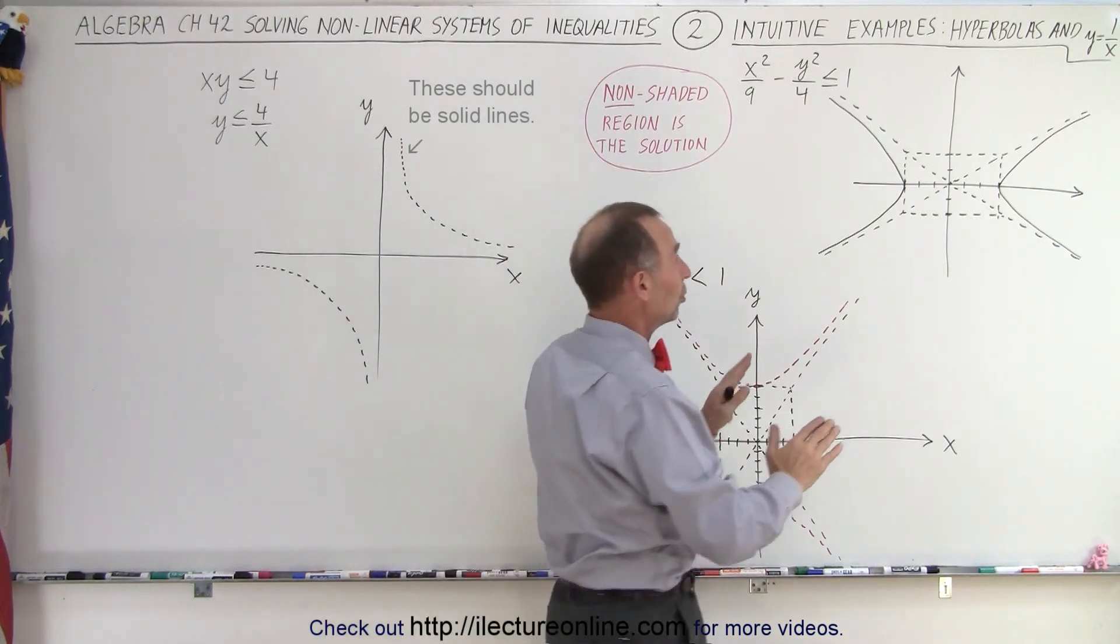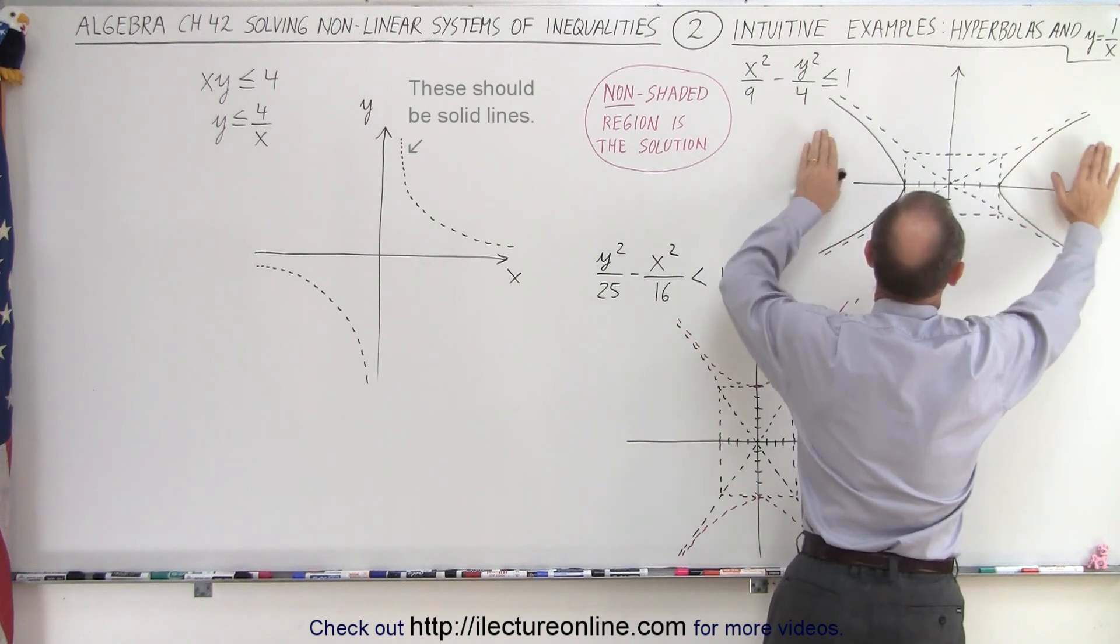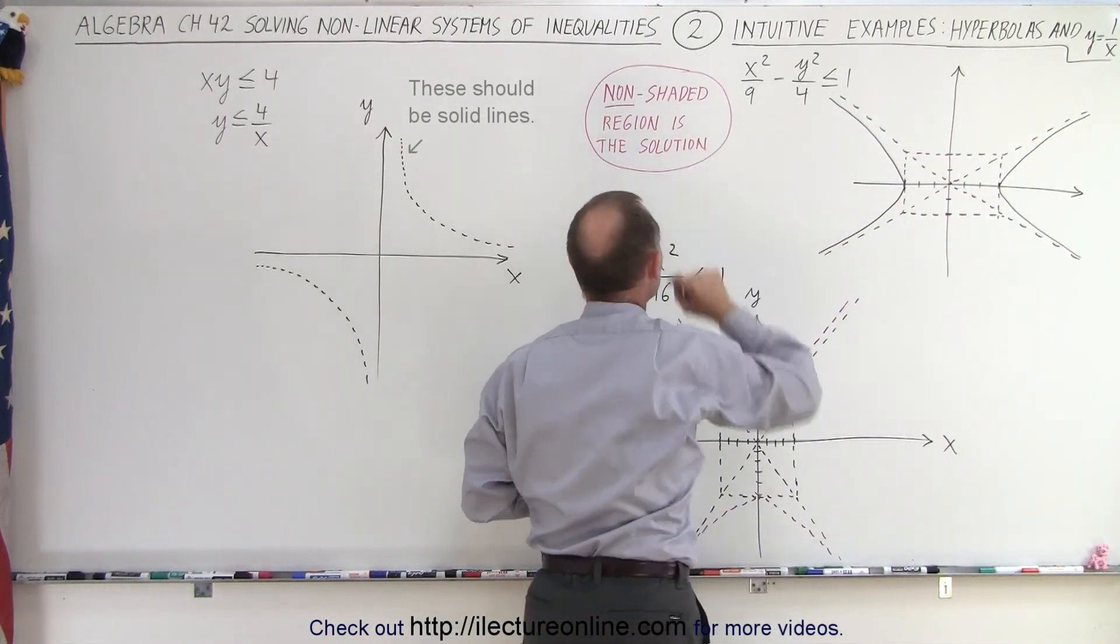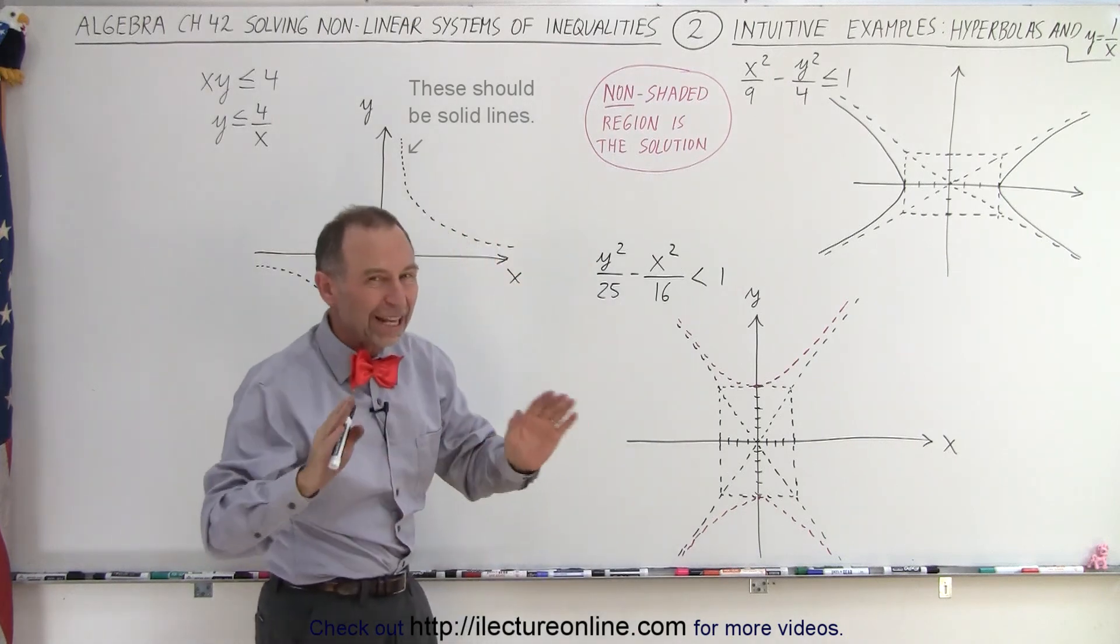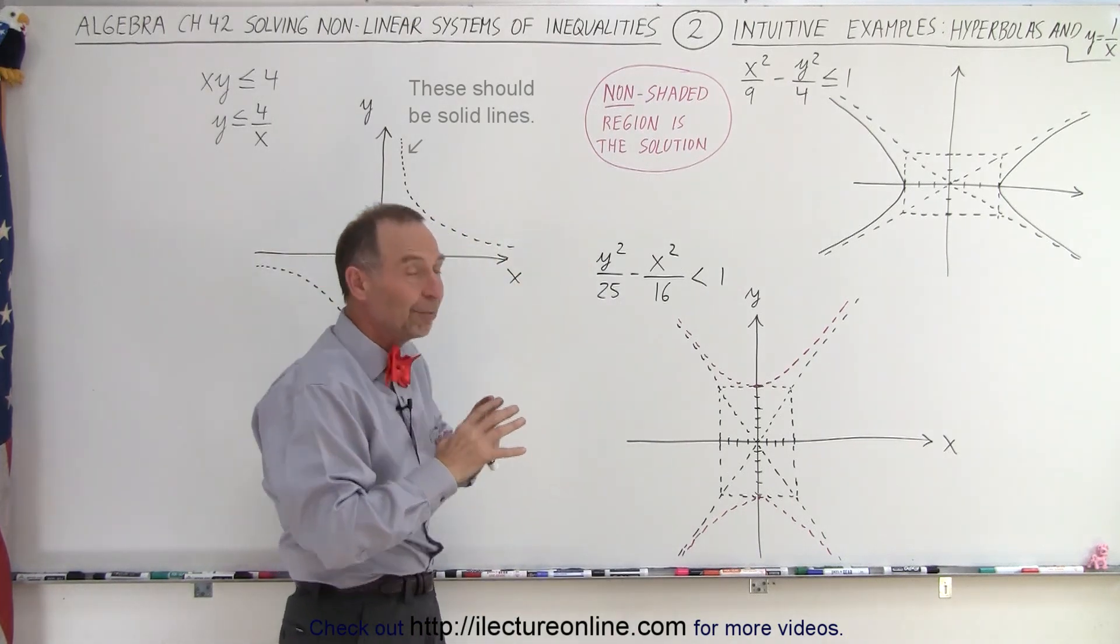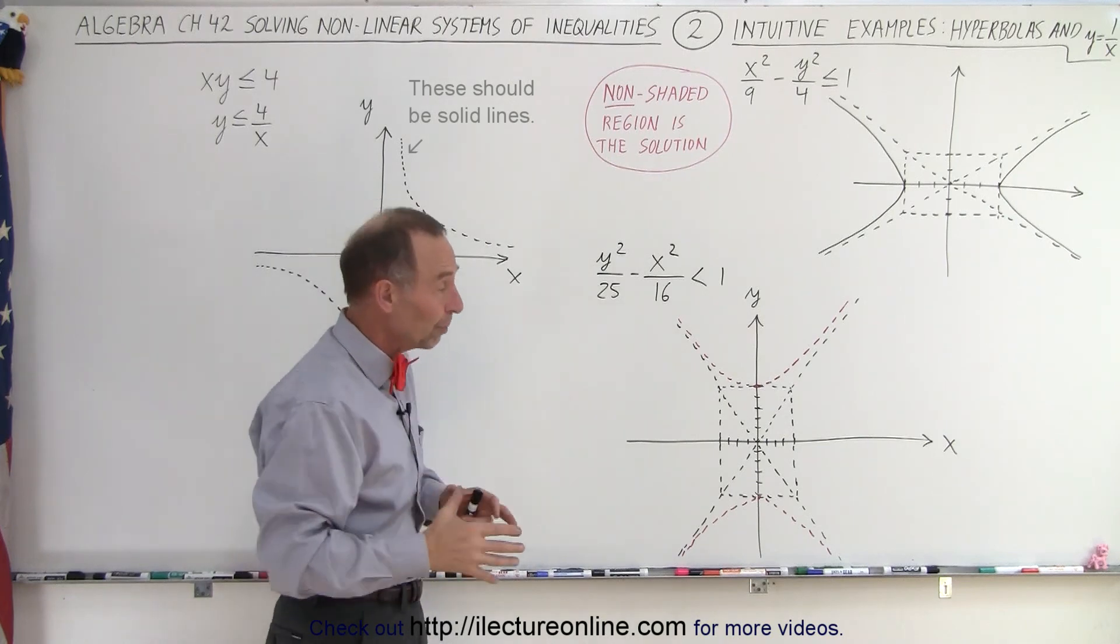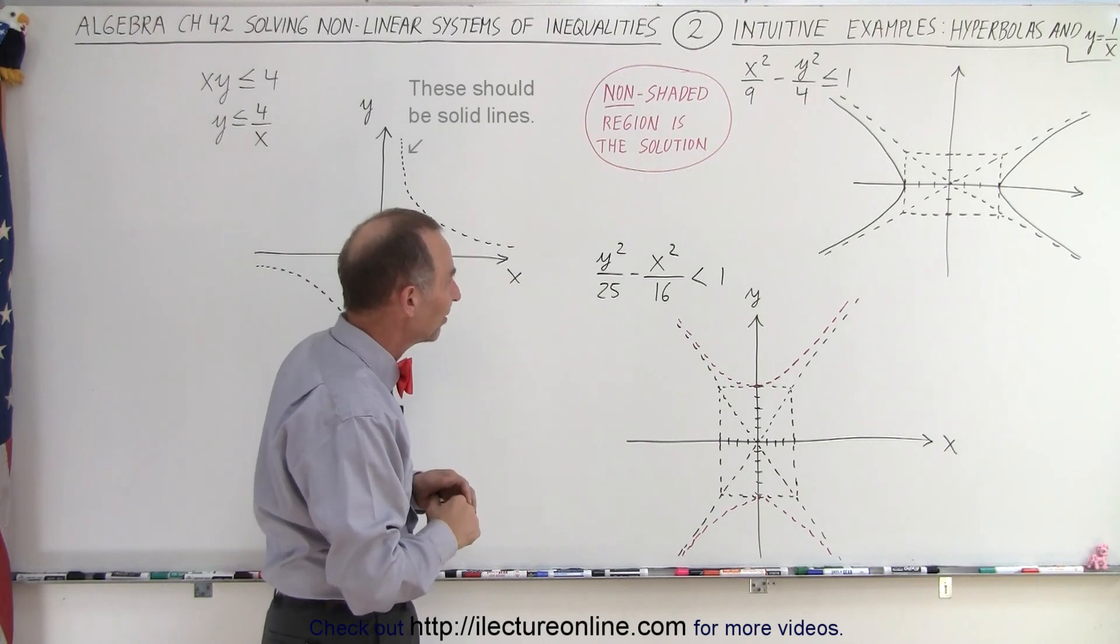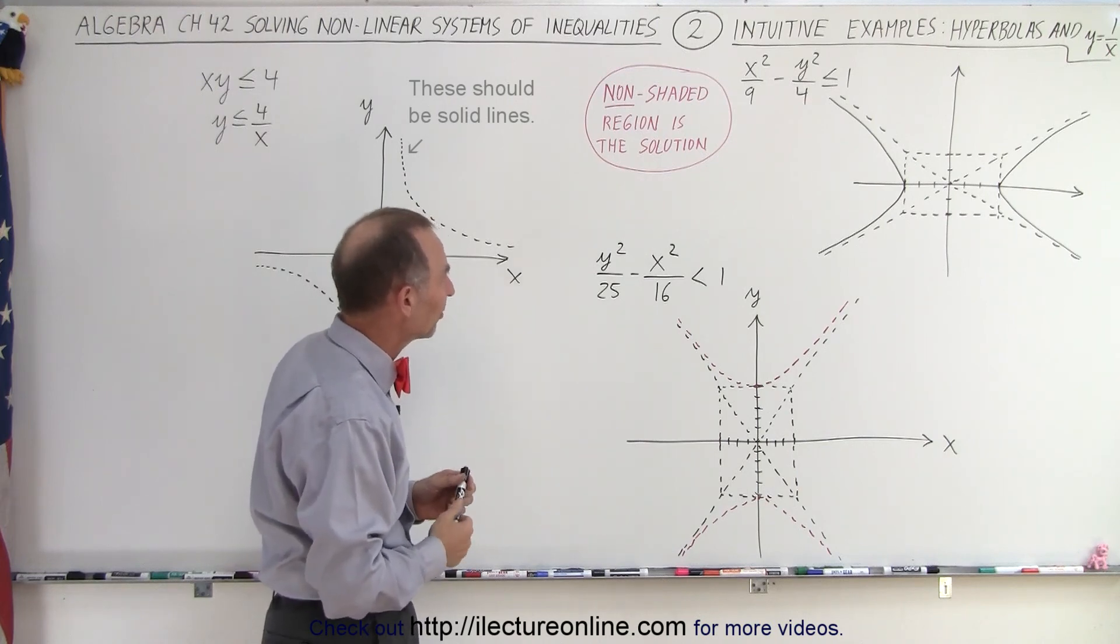Either the solution is contained within these two regions, or the solution is contained in here. We're going to shade out the region that is not part of the solution, leaving blank the portion that is part of the solution. This makes it easier when we have multiple inequalities at the same time.